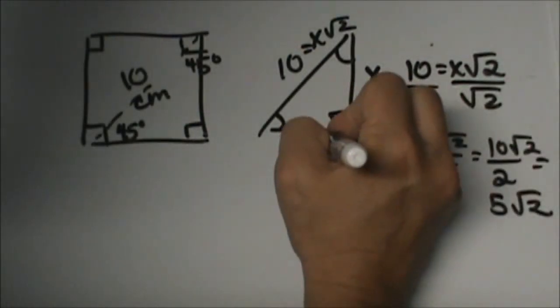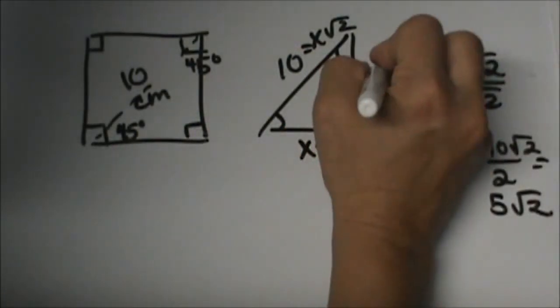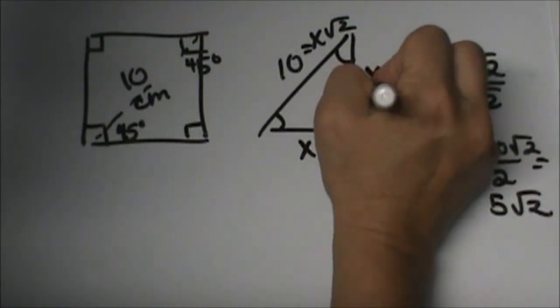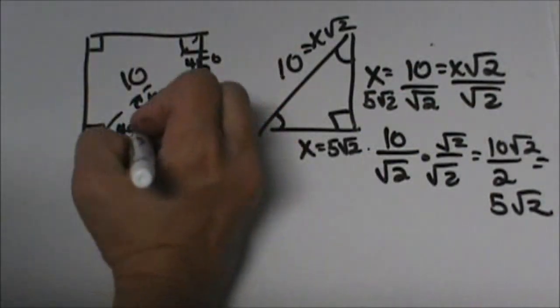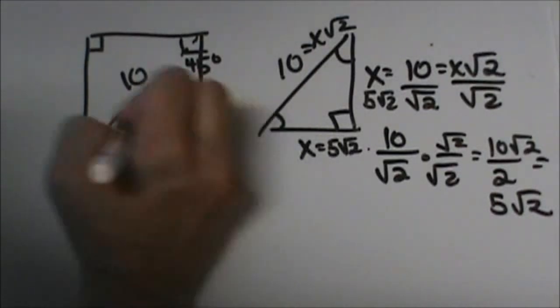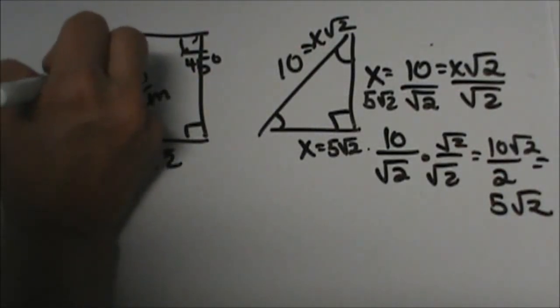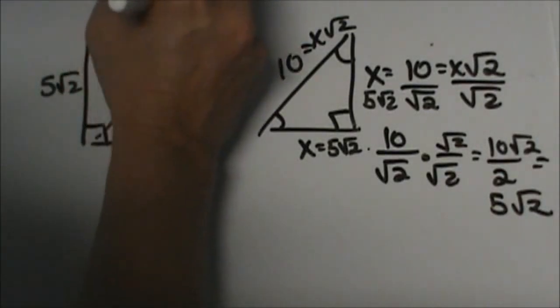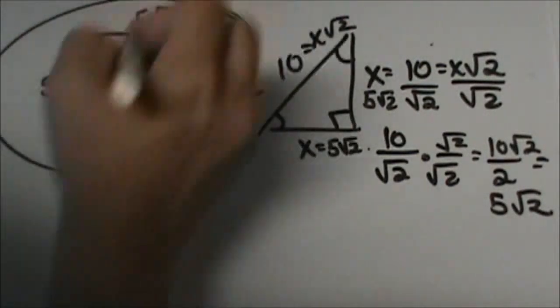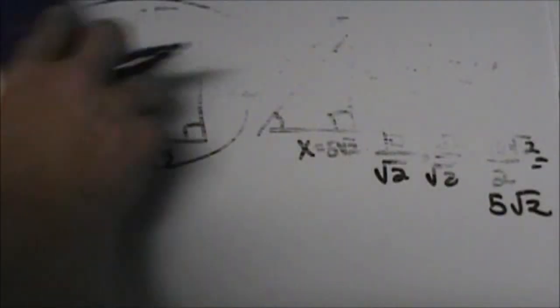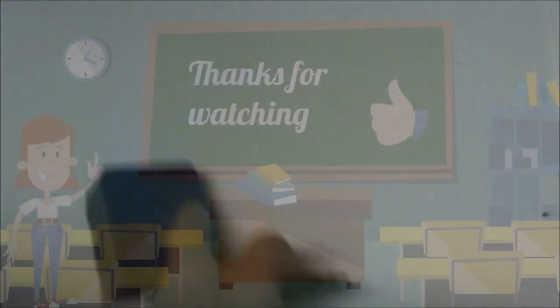Each side is going to be 5 square root 2. That is how you find the length of each side of the square given the diagonal. Inside a square you have a 45-45-90 right triangle.